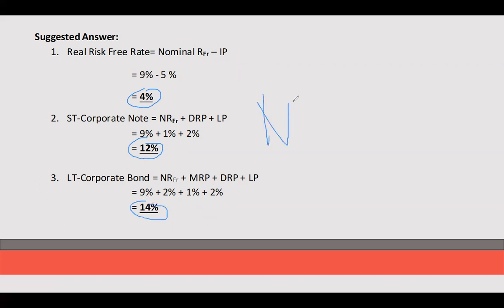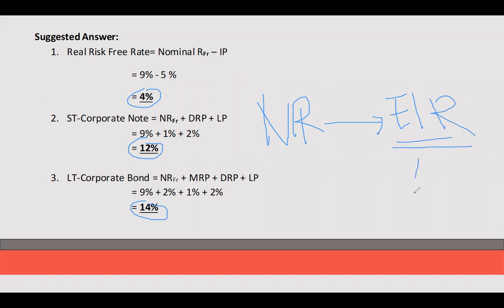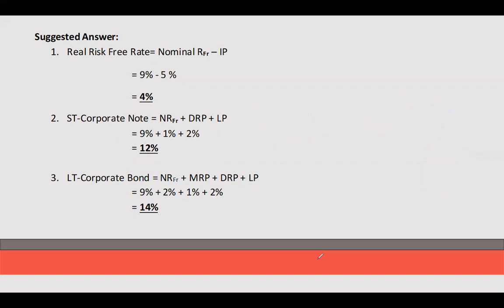Take note that these are nominal interest rates. To convert to effective interest rate, apply the formula for annual percentage yield as discussed in working capital management. This ends our discussion on determinants of interest rate. Thank you.